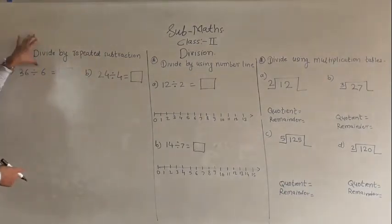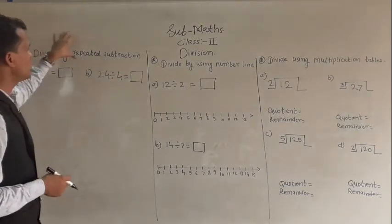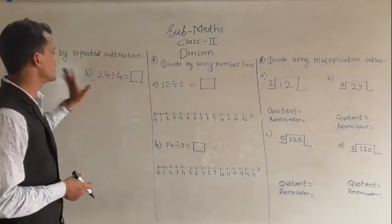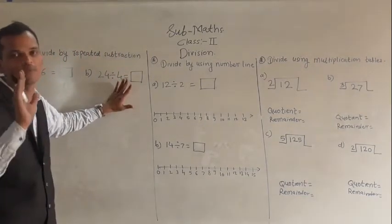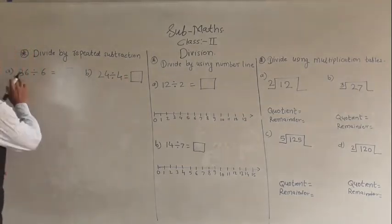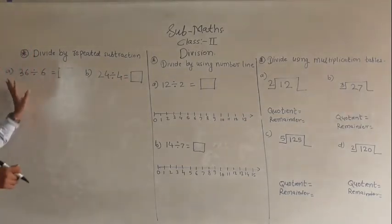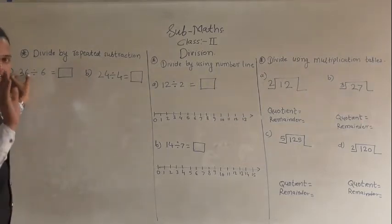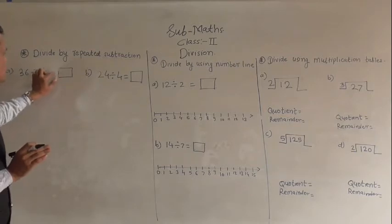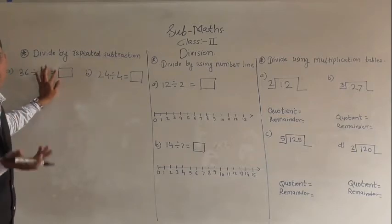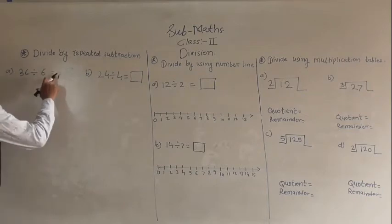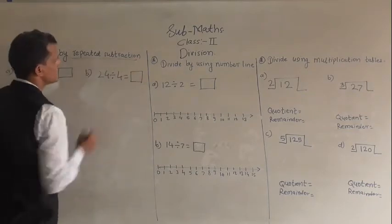First we have seen division by repeated subtraction. These examples we are going to solve by using the repeated subtraction method. Here 36 divided by 6. Here 36 is the dividend, 6 is the divisor, and we have to find out the quotient — the result of the division. This example we have to solve by using repeated subtraction.